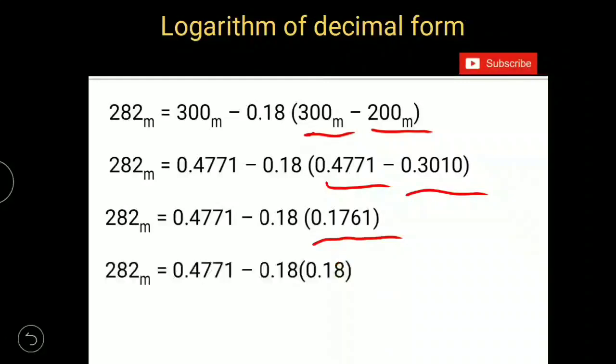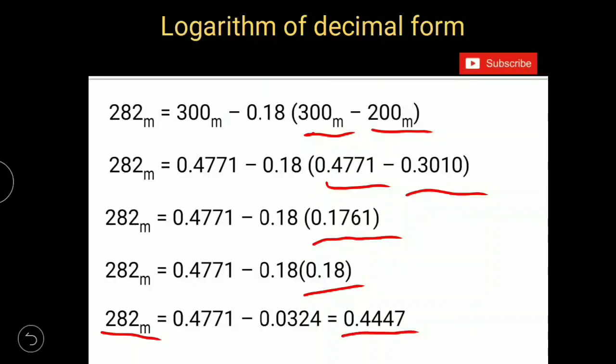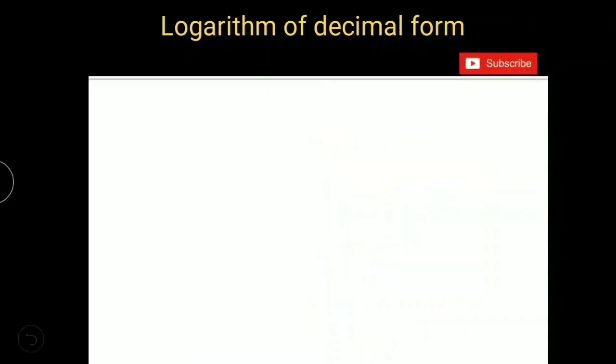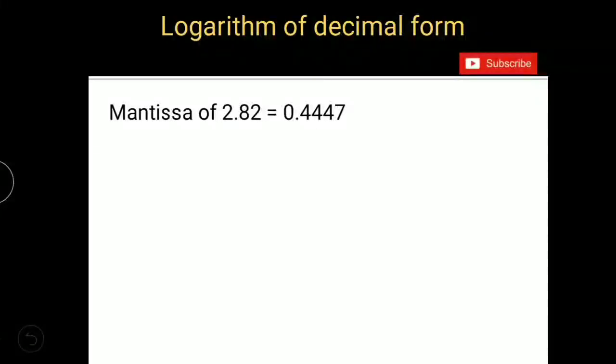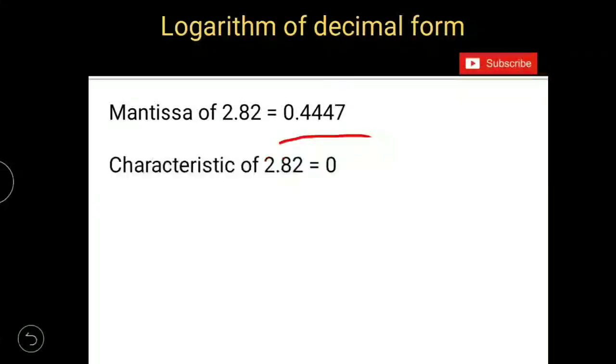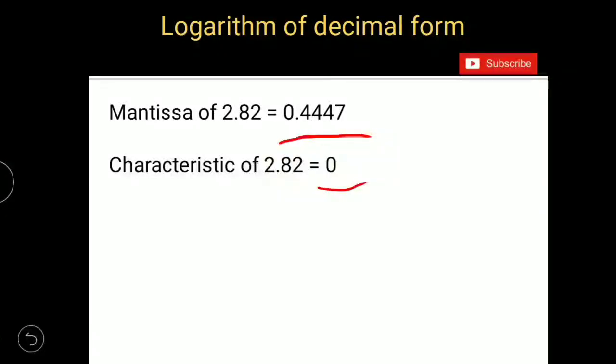Approximately it can be taken as 0.18. So finally, you will get mantissa of 282 as 0.3447. So mantissa of 2.82 is 0.3447 and characteristic is 0. So log value of 2.82 is 0.3447.